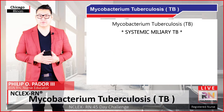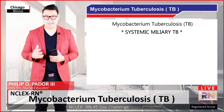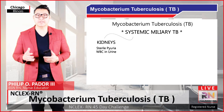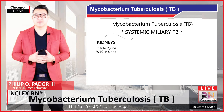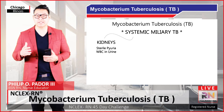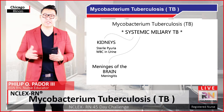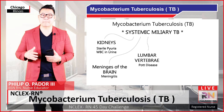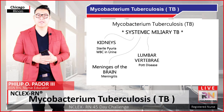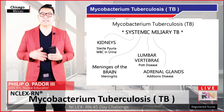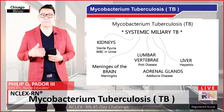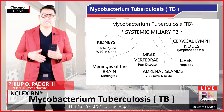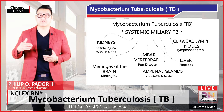When TB spreads to other tissues, it causes complications related to the organs affected. Kidneys are commonly affected, resulting in sterile pyuria, or high levels of white blood cells in the urine. It might also spread to the meninges of the brain, causing meningitis; the lumbar vertebrae, causing Pott's disease; the adrenal glands, causing Addison's disease; the liver, causing hepatitis; and the cervical lymph nodes, causing lymphadenitis in the neck, also known as scrofula.